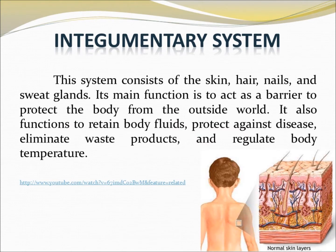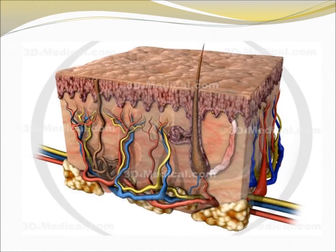Integumentary system. This system consists of the skin, hair, nails, and sweat glands. Its main function is to act as a barrier to protect the body from the outside world. It also functions to retain body fluids and temperature. This is the picture of the hair and skin.